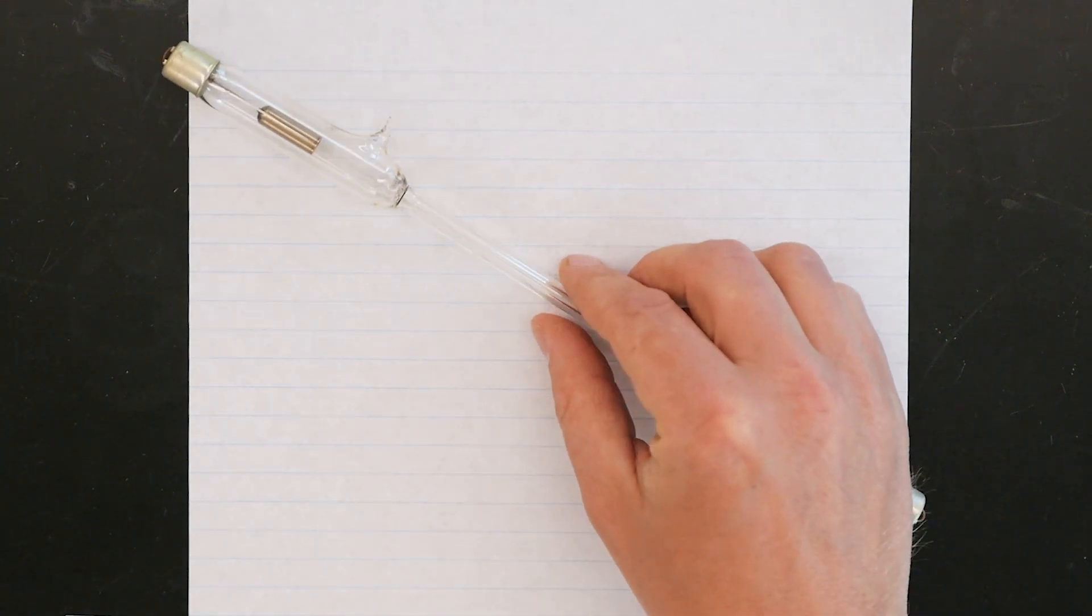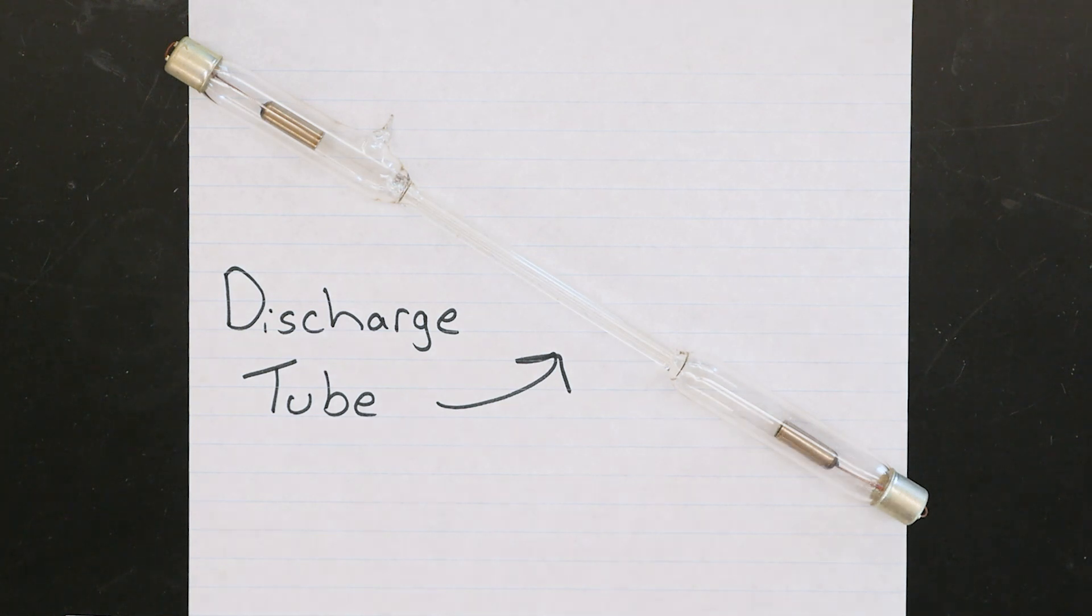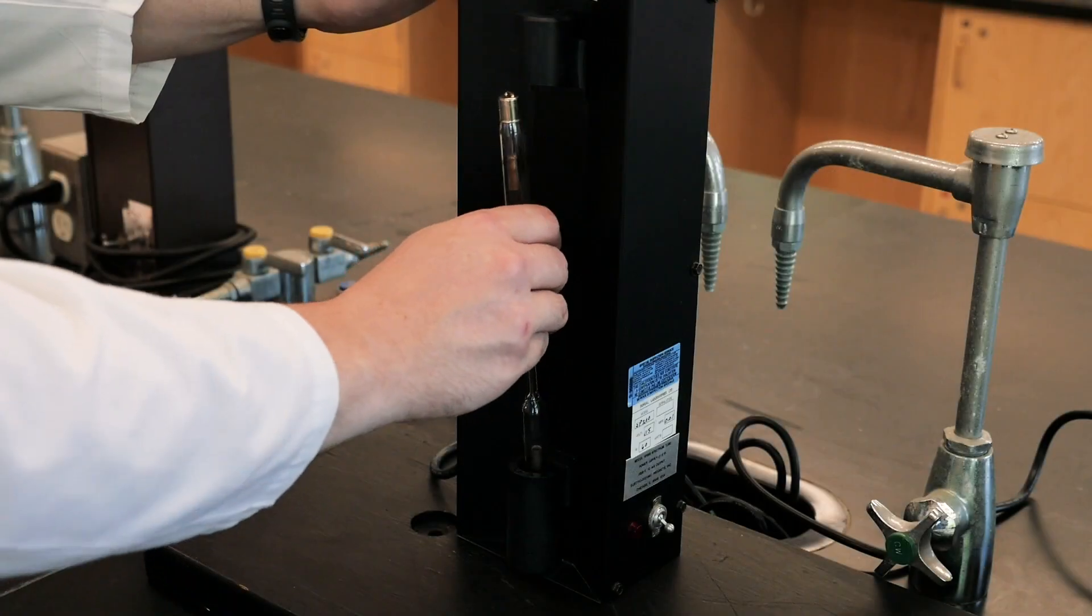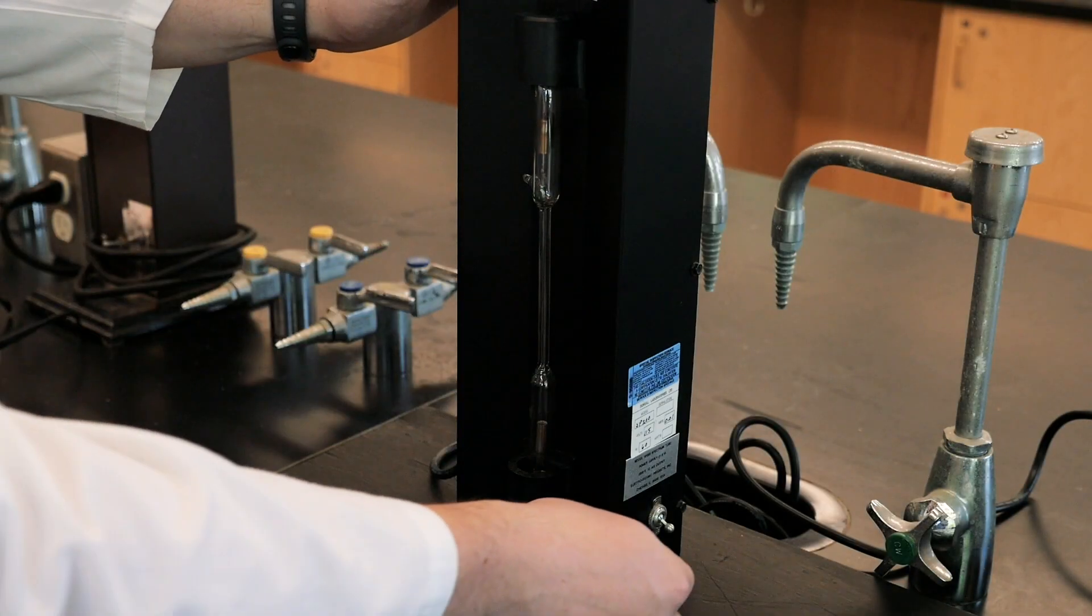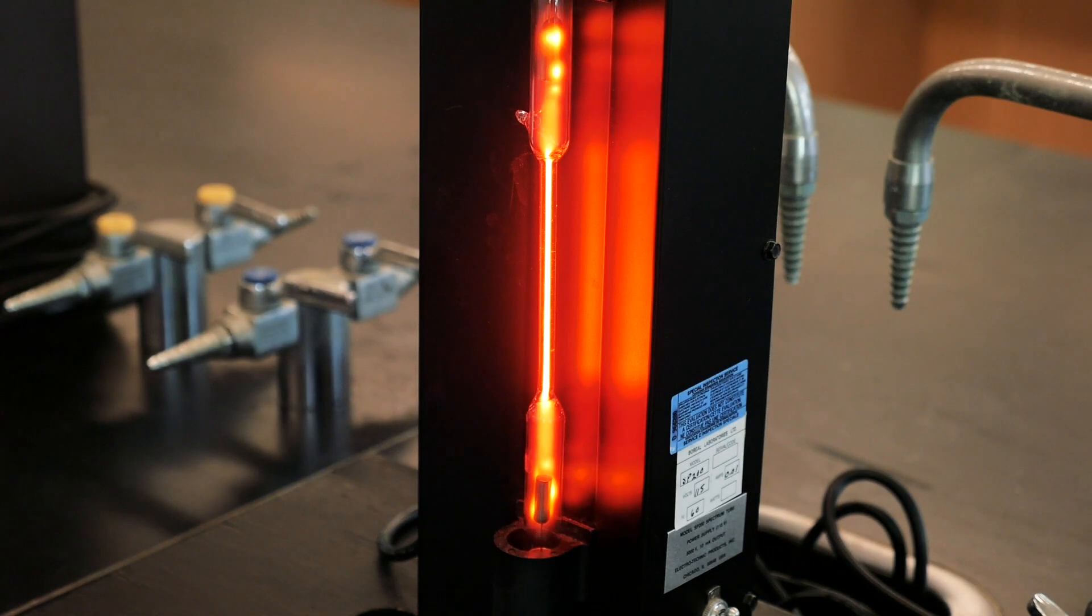To make atoms emit light, we'll be using what's called a discharge tube. This is a glass tube containing only atoms of a particular element in the gas phase. When the tube is connected to a power source, the voltage we apply increases the energy of the atoms inside, and causes them to emit light, or glow. And by the way, this is exactly how so-called neon lights work.